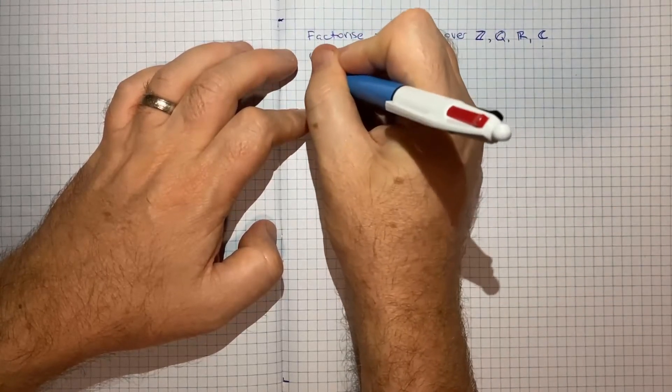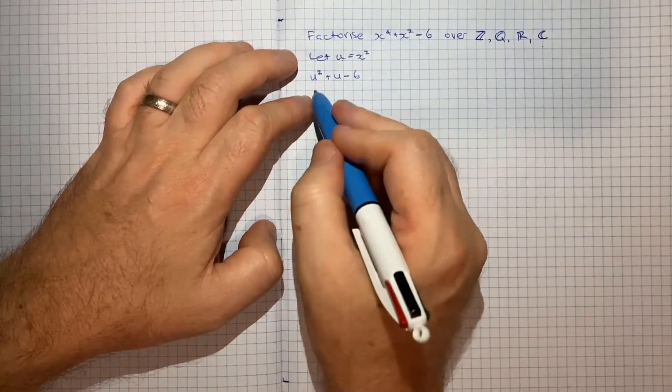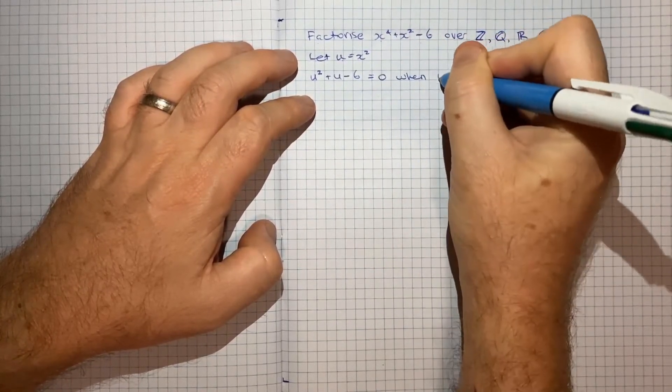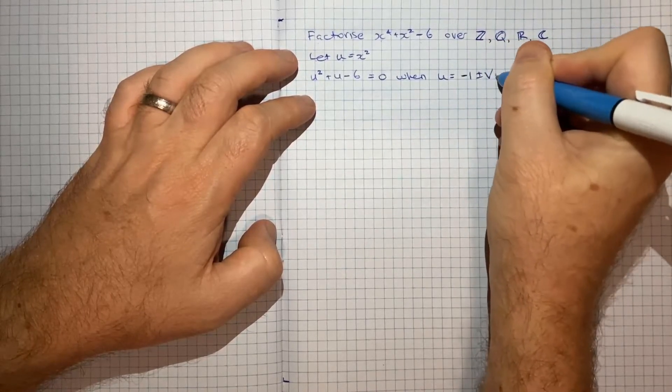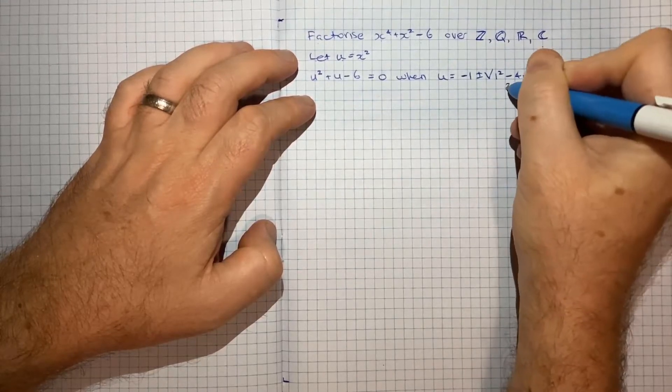So we'll get u squared plus u minus 6 is representing the same thing, and that's going to equal 0 when u is equal to negative 1 plus or minus root 1 squared minus 4 times 1 times negative 6 on 2 times 1.